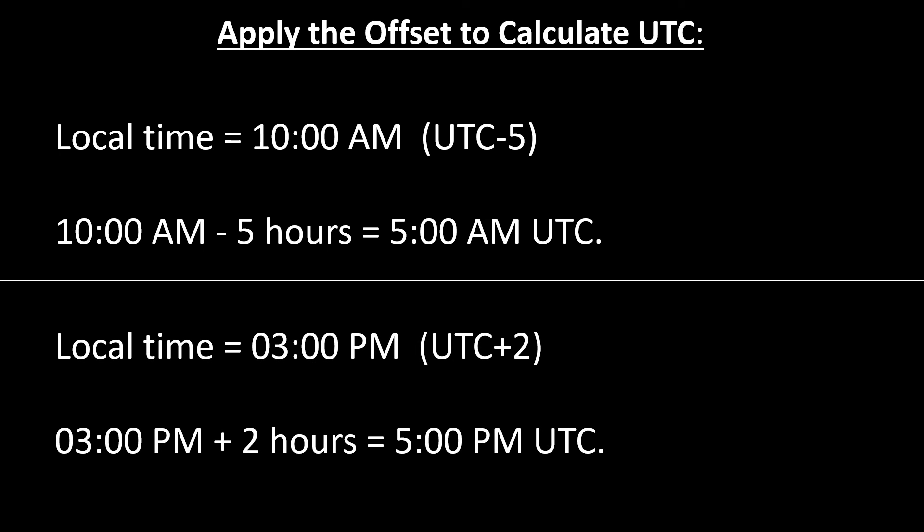Conversely, if your local time is 3 PM and you are in a time zone with a UTC offset of plus 2 hours, you would add 2 hours to your local time to get the corresponding UTC time — meaning 3 PM plus 2 hours equals 5 PM UTC.